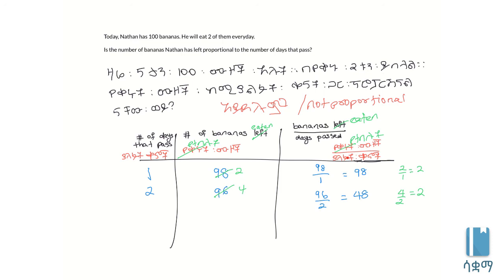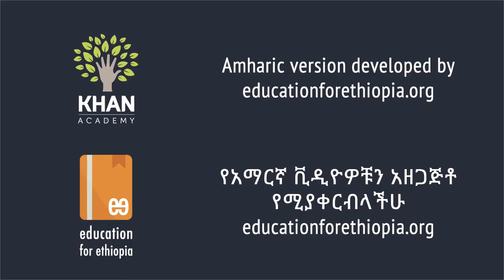The key is understanding the difference between proportional relationships and other relationships. They aren't proportional because there isn't the same constant ratio maintained throughout.